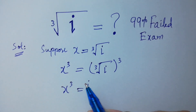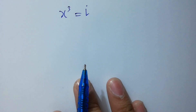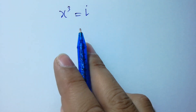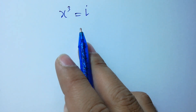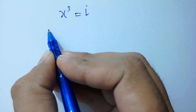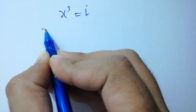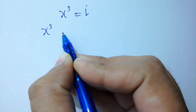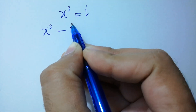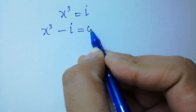So here, to solve x³ = i, we rearrange it as x³ - i = 0.